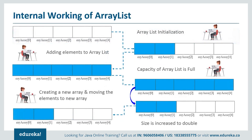Now let's look at the internal working of ArrayList. First, we create an empty array and then go on adding elements. Once the size of the array is full — that is, if the number of current elements is greater than the maximum size of the array — we need to increase the size of the array. Since the array size cannot be increased dynamically, internally a new array is created and the old array is copied to the new array. By this, the size is automatically doubled. So you can keep adding elements as needed — that's how it works internally.